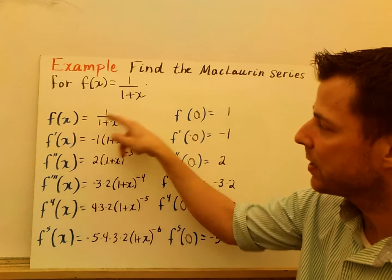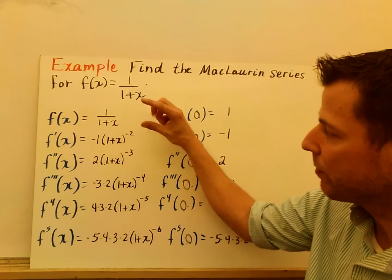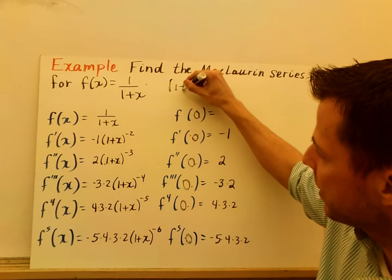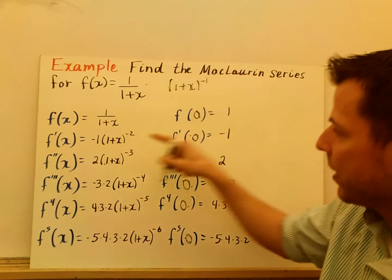So, f of x equals 1 over 1 plus x. So you can bring that up and make that, the idea here is you can really call it 1 plus x to the negative 1, and I go from there.